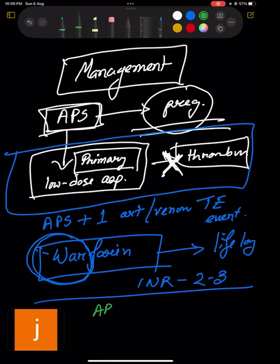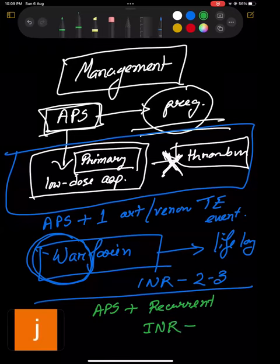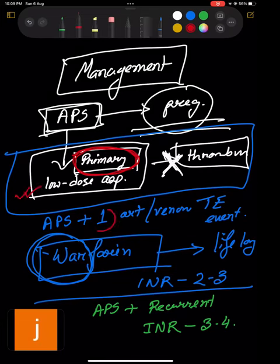Now the last but not the least. APS patient, not one episode only. It is like recurrently she's coming, recurrent episode. Venous thromboembolic events are there, recurrently is having this kind of events. So that time, same treatment, this warfarin, the war will be against this embolic event will be going on. But only your INR level you should get it up, it should be three to four. That's it. So the fact is that if primary but no thromboembolic event, low-dose aspirin only. One event, warfarin lifelong, two to three. Recurrent event, warfarin lifelong, three to four. Is it clear? I'm talking about non-pregnant. Now I will switch to pregnant.